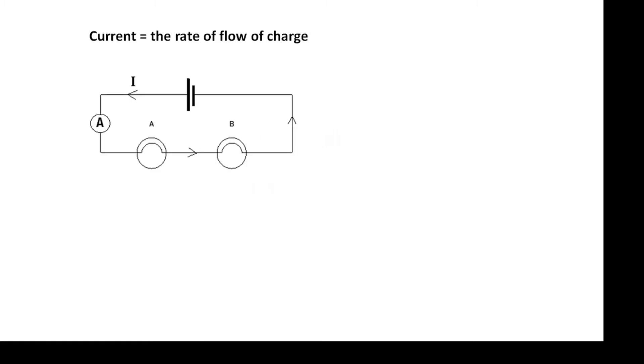Electricity, my first electricity video, and it's about current. What is current? Current is the rate of flow of charge. Charge is positive or negative stuff that things can have. There's two types of charge: positive or negative.